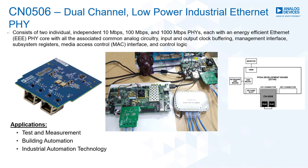Second is the CN0506, which is a dual-channel industrial Ethernet PHY based on an FPGA development platform using the ADIN1300. It contains two independent PHYs for Ethernet physical layer management and has complete open-source HDL and software available for Intel and Xilinx FPGAs. It supports multiple speeds up to 1000 Mbps using line and ring network topologies for applications in industrial and building automation or test and measurement.